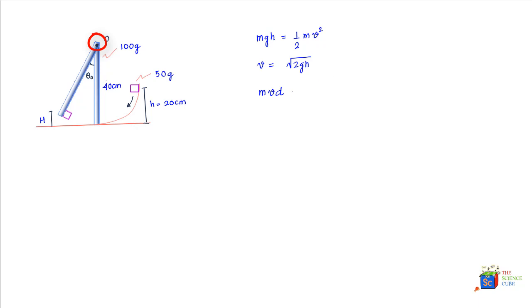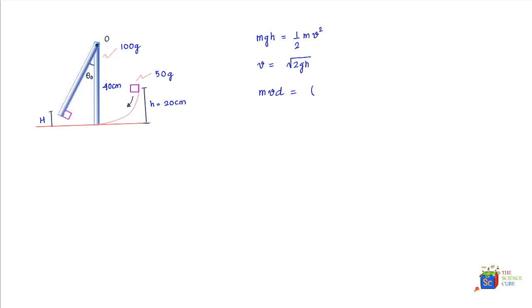This angular momentum should equal the angular momentum of the block-rod system after the collision, which equals I·omega, where I is the moment of inertia of the block-rod system. The moment of inertia of the block-rod system is I_rod plus md², where m is the mass of the block, multiplied by the angular velocity after the collision.